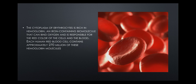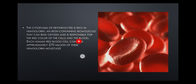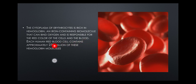The cytoplasm of erythrocytes is rich in hemoglobin — an iron-containing biomolecule that can bind oxygen and is responsible for the red color of the cells and the blood. Each human red cell contains approximately 270 million hemoglobin molecules.